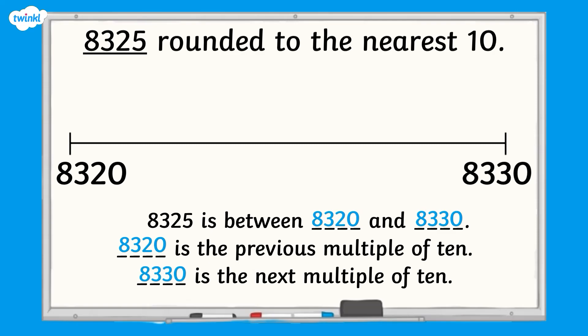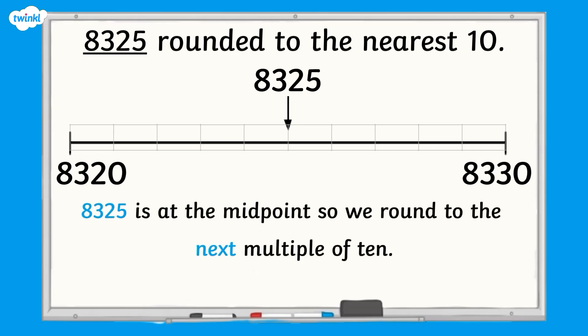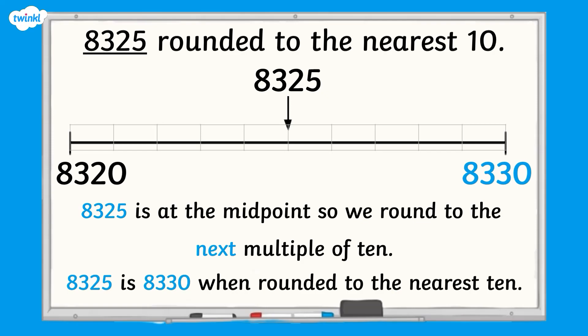When we place 8325 on the number line, we can see that it is exactly at the midpoint between the multiples. It is not closer to either of them. When this is the case, we always round to the next multiple of 10. 8325 is 8330 when rounded to the nearest 10.